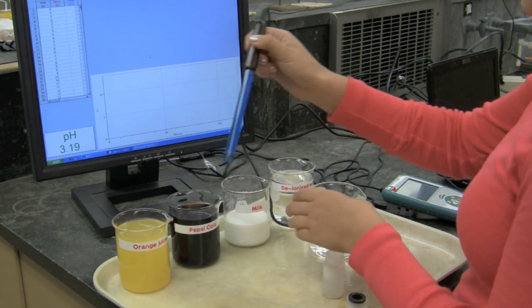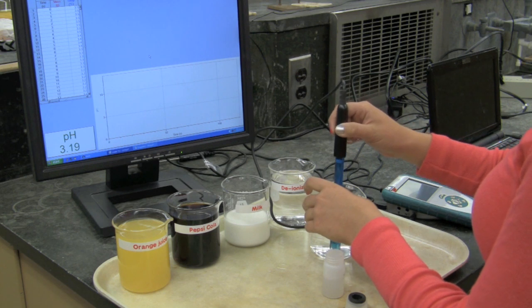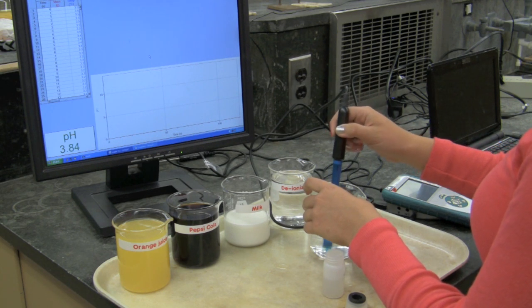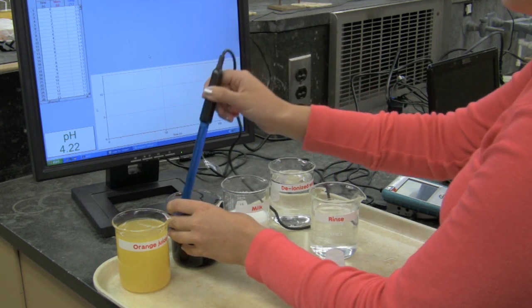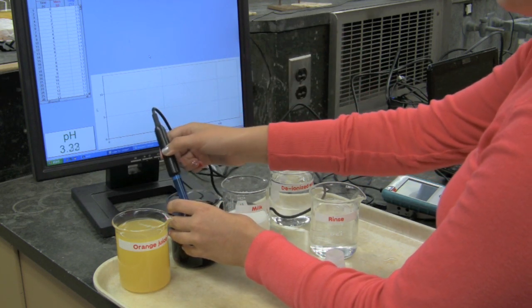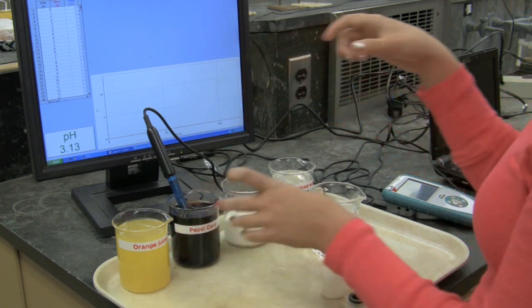She is removing the probe from the orange juice and placing it in a rinse. After a few seconds, she places the probe into a beaker of Pepsi-Cola directly to the right of the beaker of orange juice.